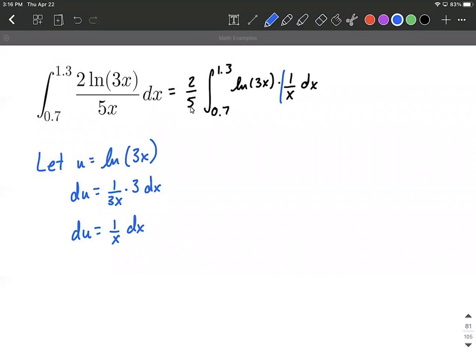Well, that works out really nicely that we have one over x dx right here. So we're gonna replace that with du. And then the natural log of three x, that's gonna get replaced with a u. So let's rewrite this in terms of u. So we have two fifths comes along from out in front, the integral symbol. We substitute that u in for natural log of three x, and then we get to put a du in for the one over x dx.